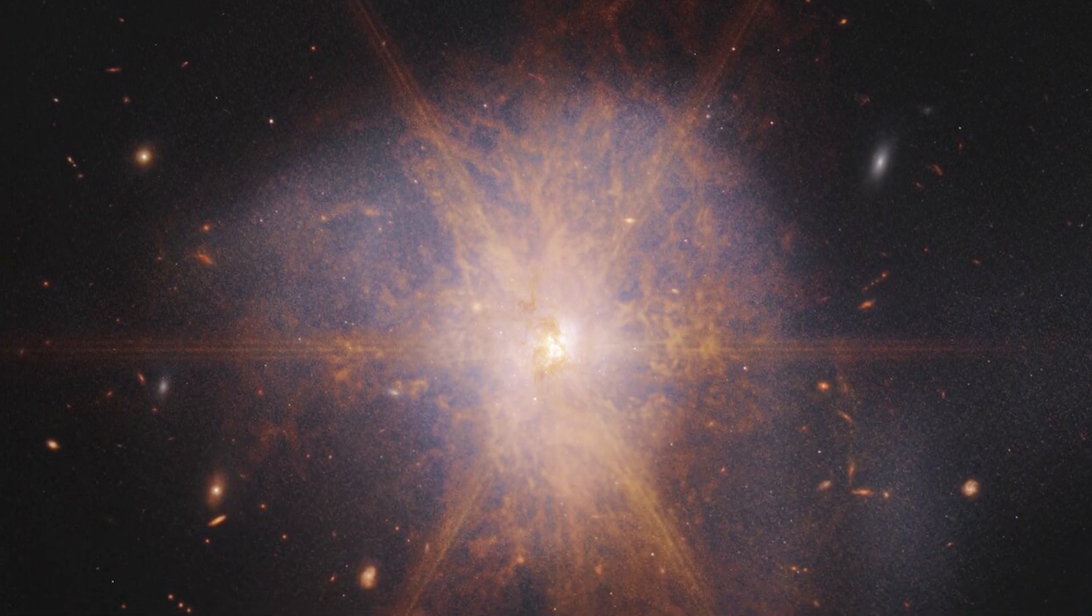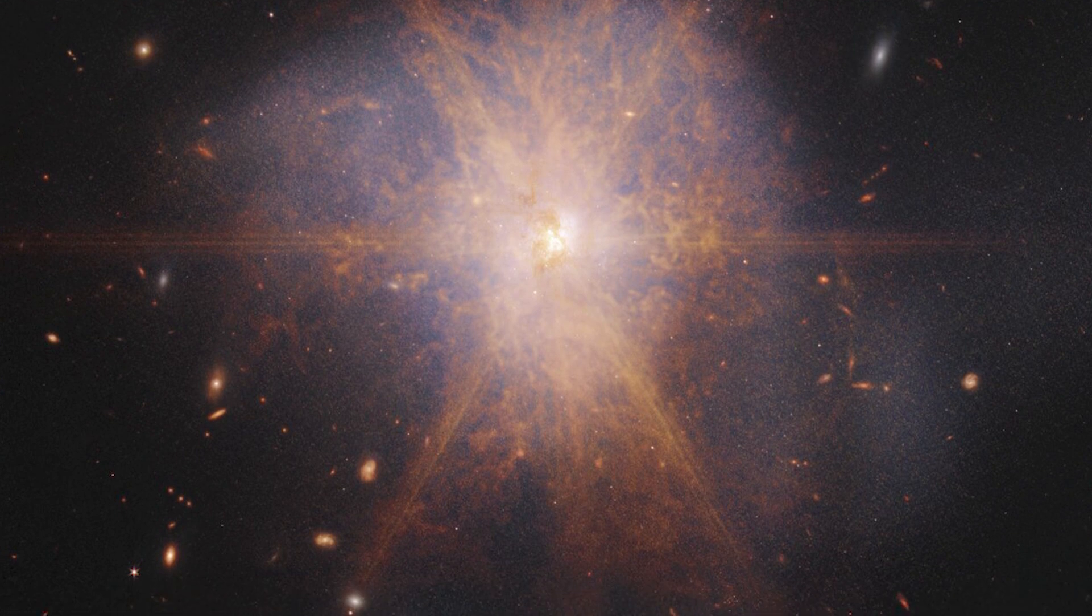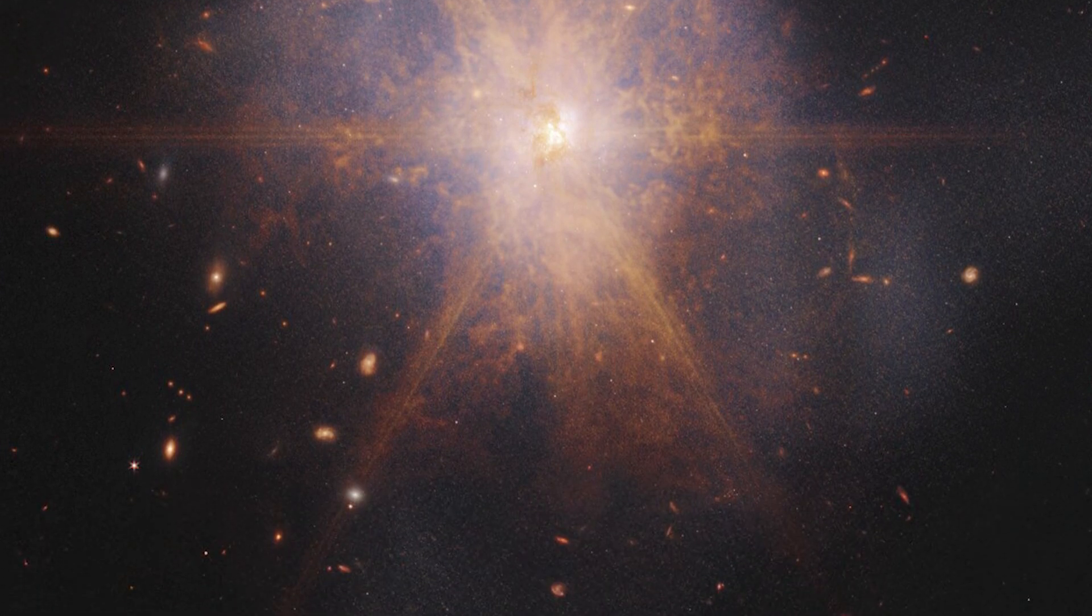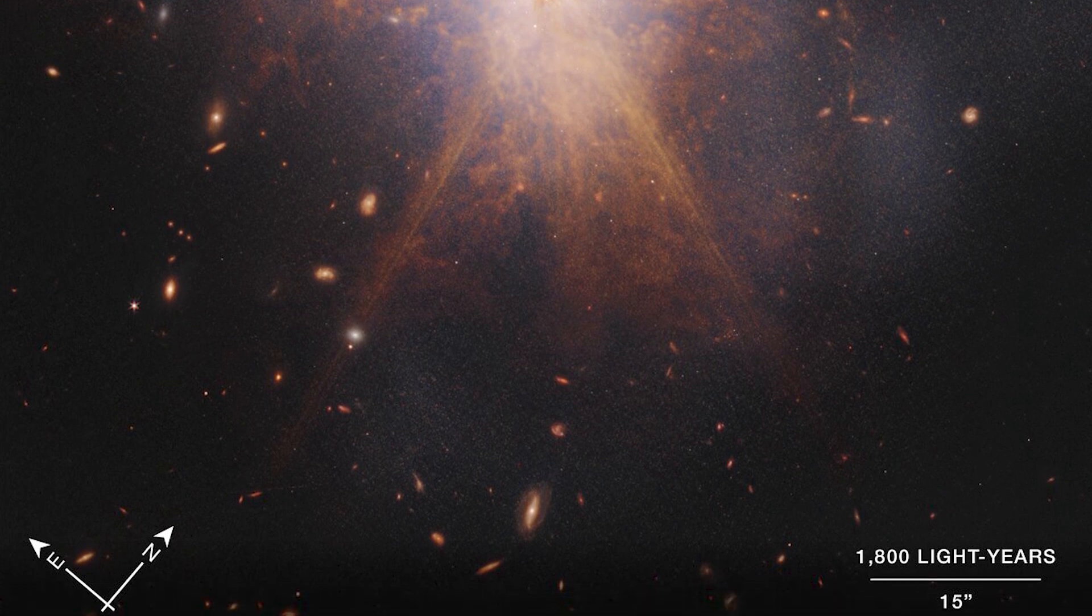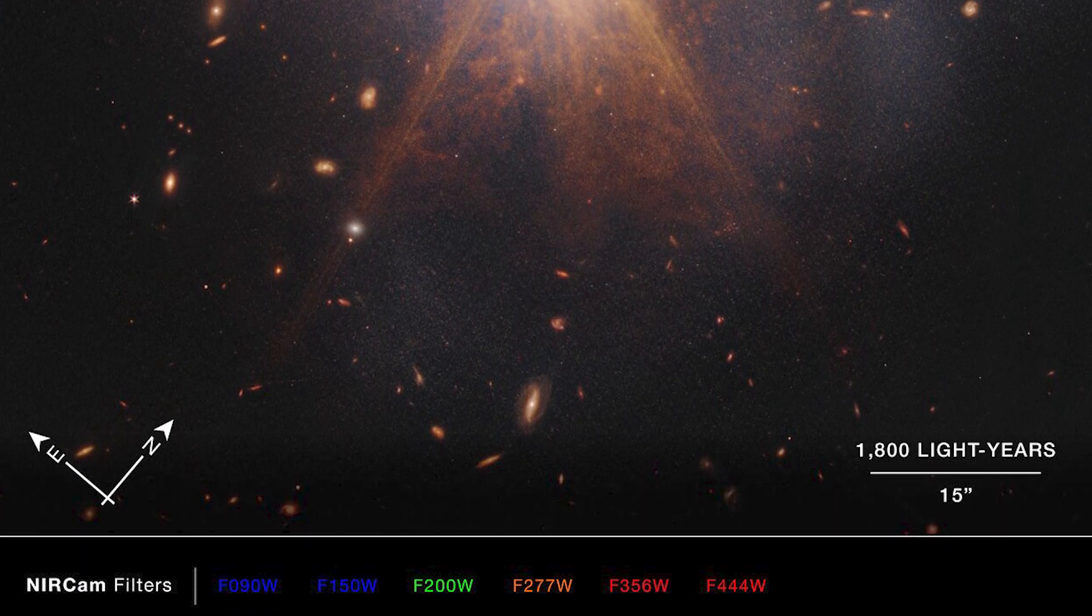When two spiral galaxies merge, the phenomenon known as ARP 220 shines brightest in the infrared, making it perfect for observation by the James Webb Space Telescope.